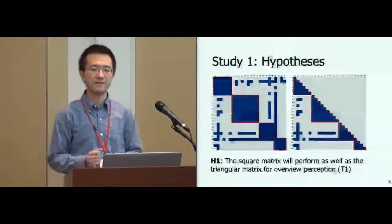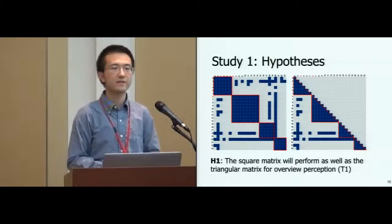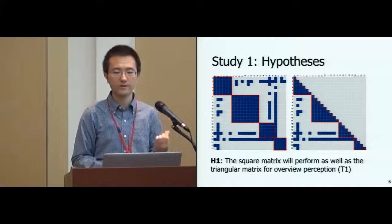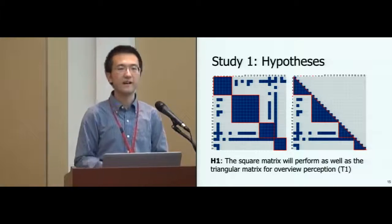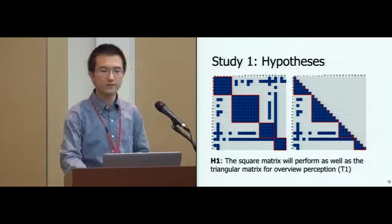Correspondingly, we have three hypotheses. First, if we look at the shapes of the communities, there are either squares or triangles in the two representations. We believe that squares and triangles should be equally easy for perception in the two representations.